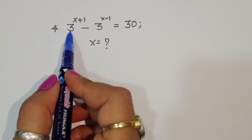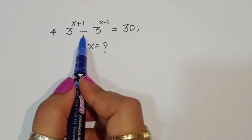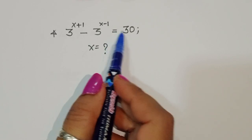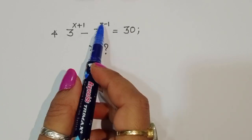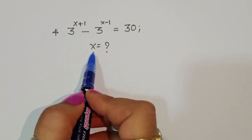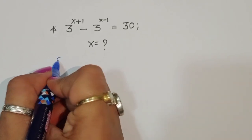The problem is given: 3 power x plus 1 minus 3 power x minus 1 is equal to 30. We have to find out the value of x. Let's see the solution.